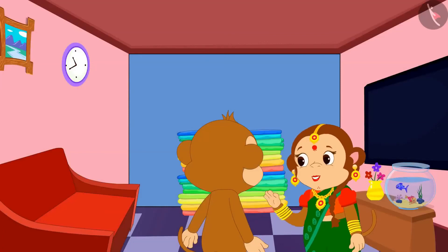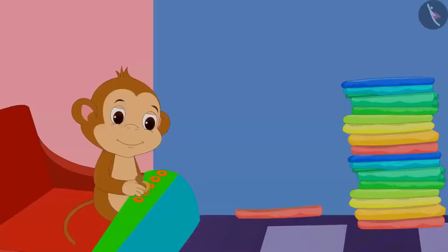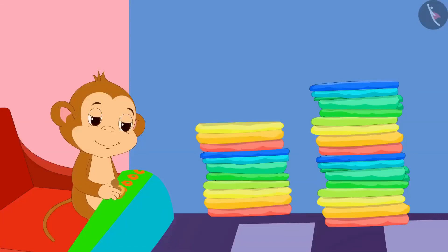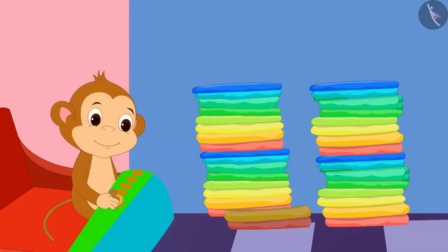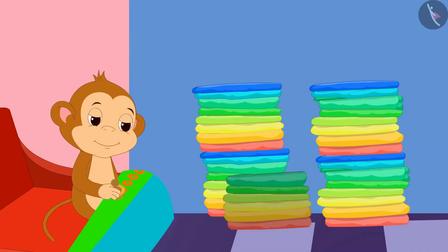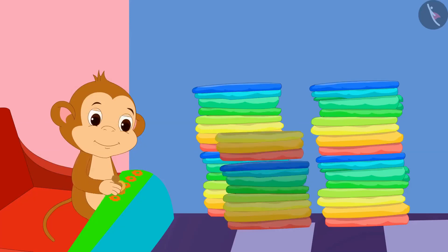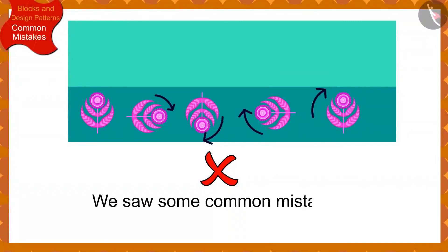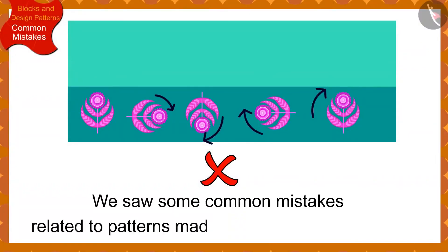Banno explained Babban's mistake to him. Then Babban helped Banno create designs on a lot of sarees without making any further mistake. Children, in this video we saw some common mistakes related to patterns made from blocks and design.